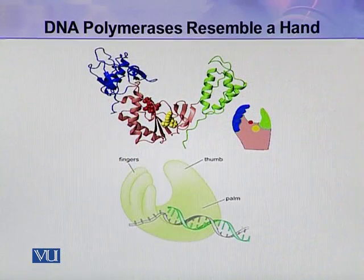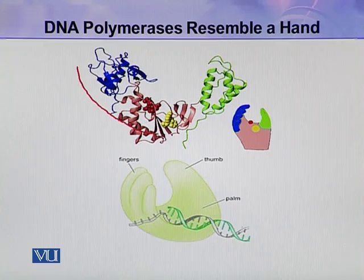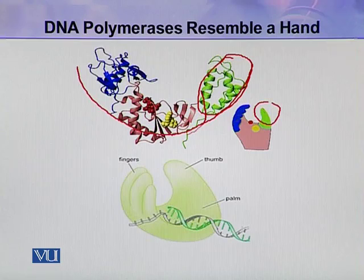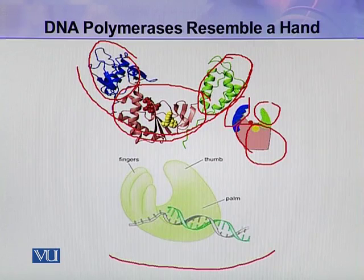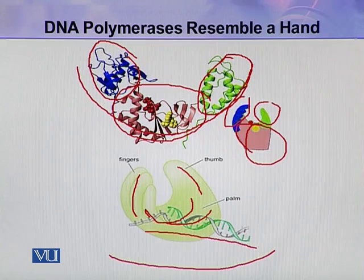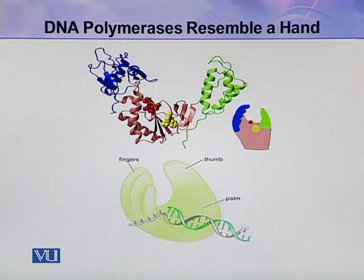In this diagram, you can see the three-dimensional structure of DNA polymerase with its three domains. One domain resembles the thumb, another resembles the palm, and the third resembles the fingers. This DNA resides in the cleft or palm of the enzyme. This is the structure of DNA polymerase, and it resembles a hand.